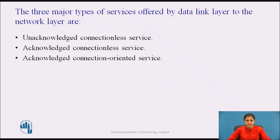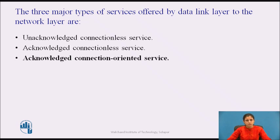The most sophisticated service the data link layer can offer to the network layer is acknowledged connection-oriented service. With this service, the source and destination machines establish a connection before any data are transferred. Each frame sent over the connection is numbered, and the data link layer guarantees that each frame sent is received exactly once and that all frames are received in the right order. Connection-oriented service thus provides the network layer processes with the equivalent of a reliable bitstream. It is appropriate over long, unreliable links such as a satellite channel or a long-distance telephone circuit. If acknowledged connectionless service is used instead, lost acknowledgments could cause a frame to be sent and received several times, wasting bandwidth.